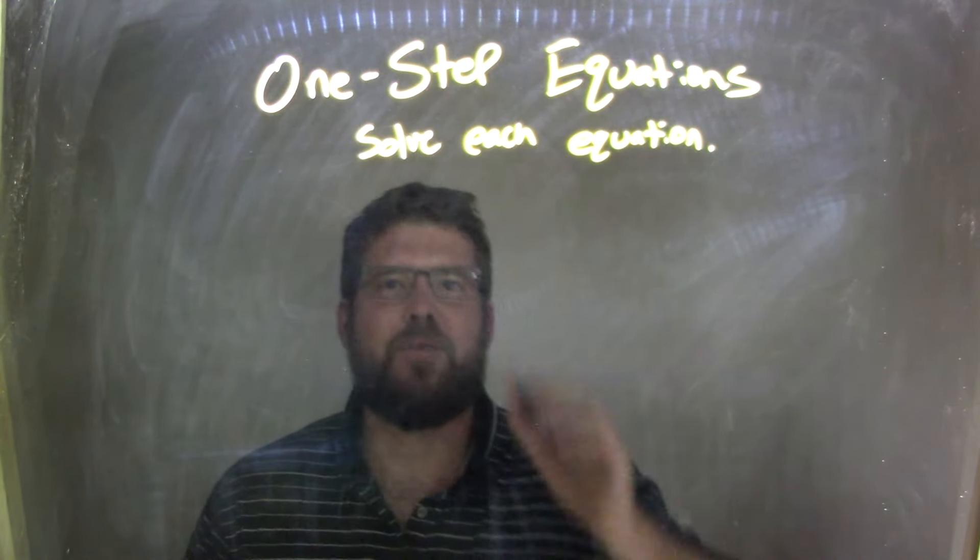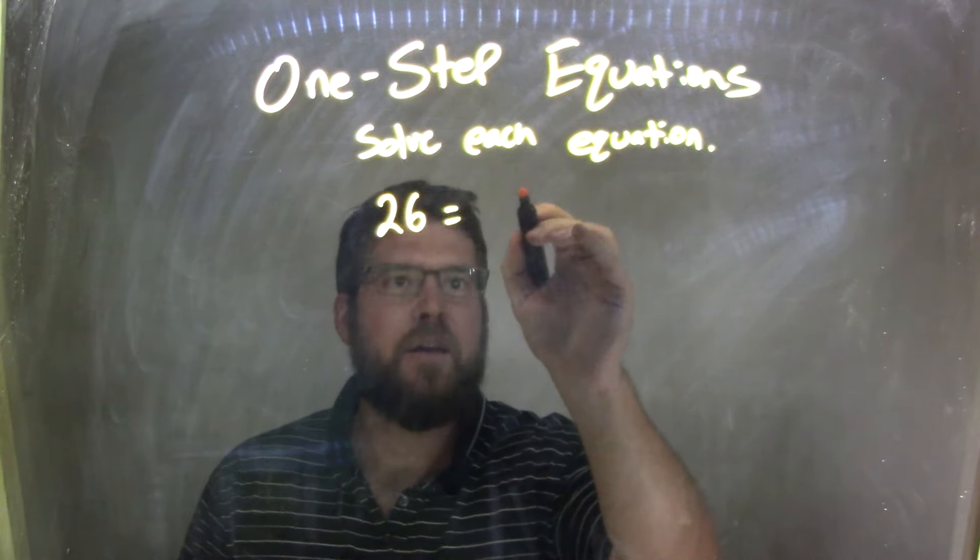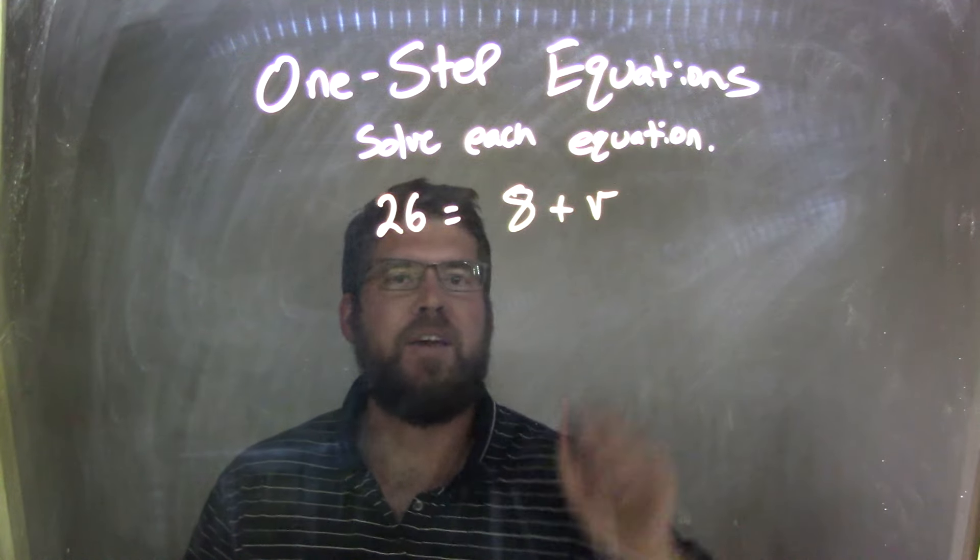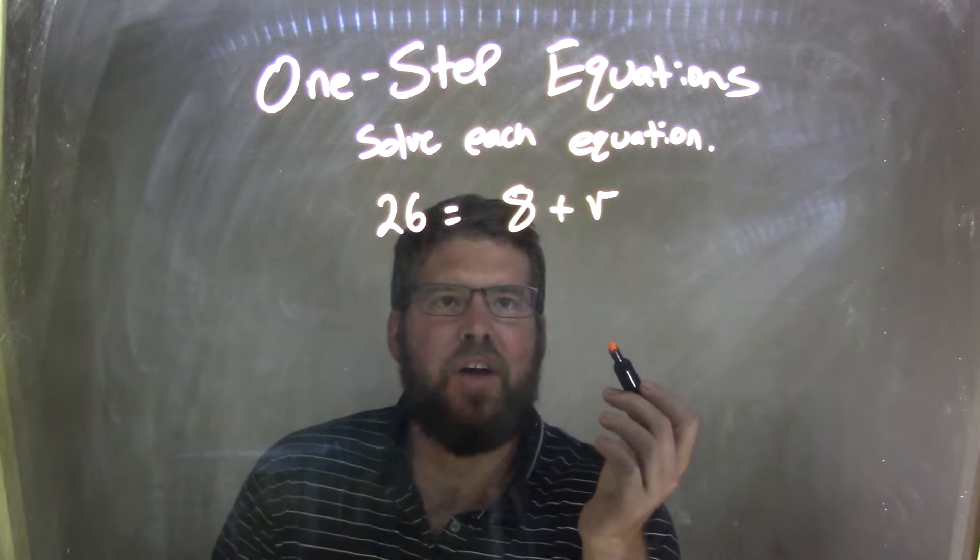So if I was given this equation, 26 equals 8 plus V, well, I first need to see how I can get the letter V by itself.